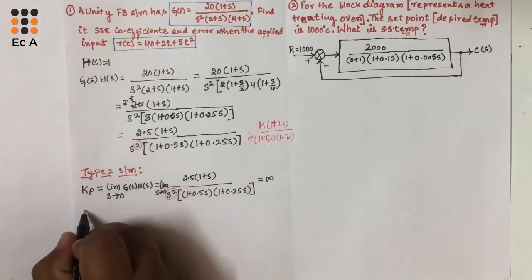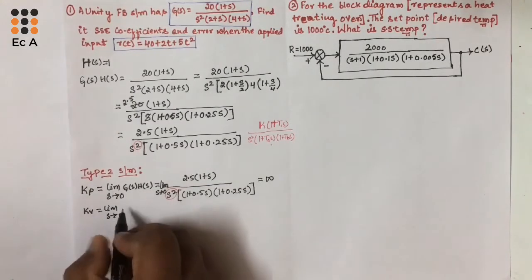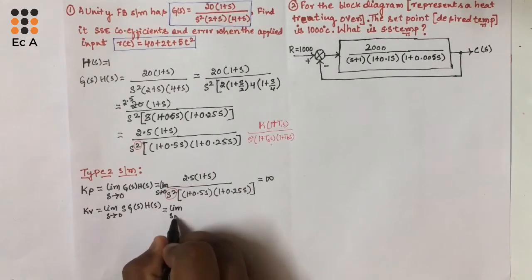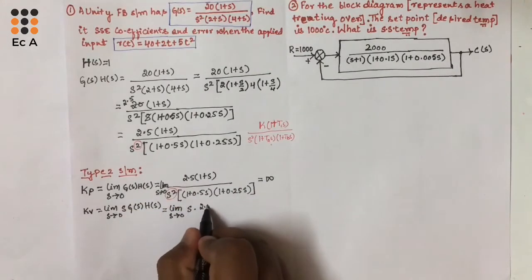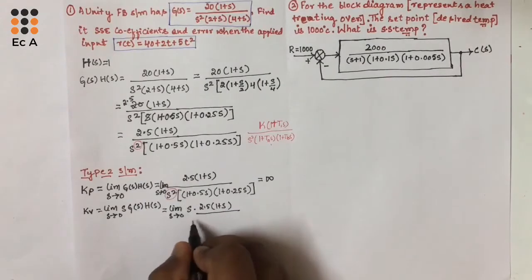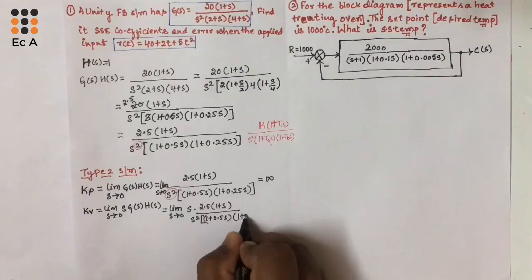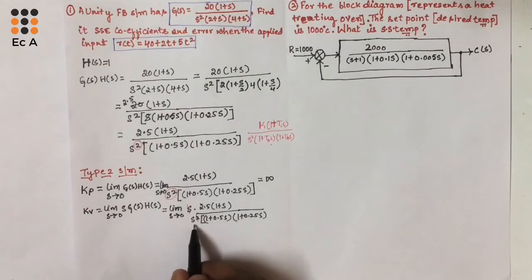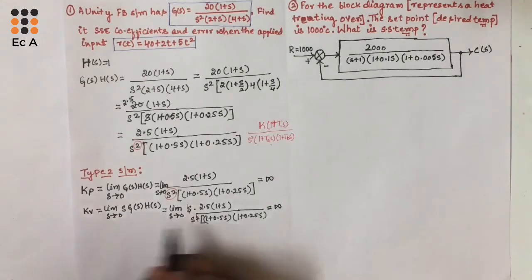Now let us find the velocity error coefficient Kv. Kv equals the limit of S tends to 0 of S times G(S) times H(S). Substituting: S times 2.5 times (1 plus S) divided by S squared times (1 plus 0.5S) times (1 plus 0.25S). We cancel one S with S squared, leaving S in the denominator. Applying S equal to 0, the denominator becomes 0, so Kv equals infinity.